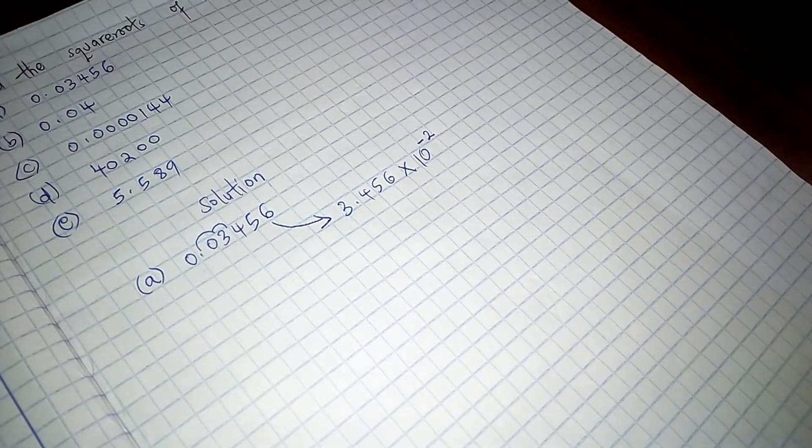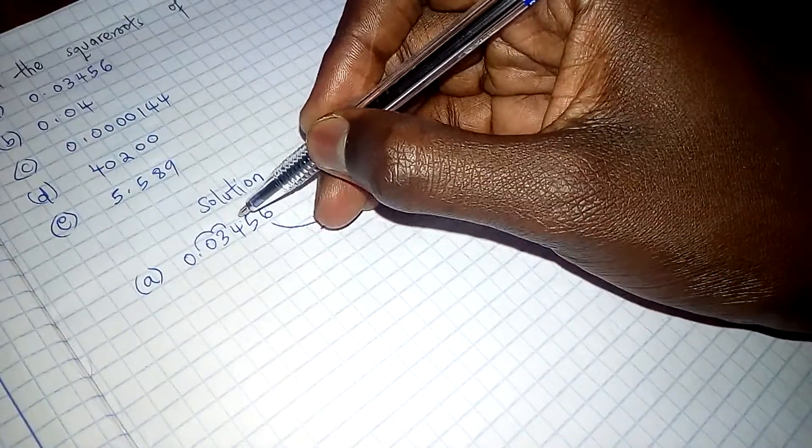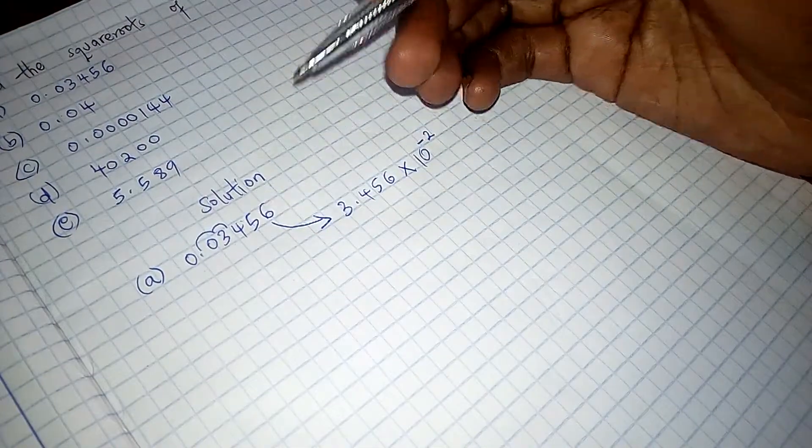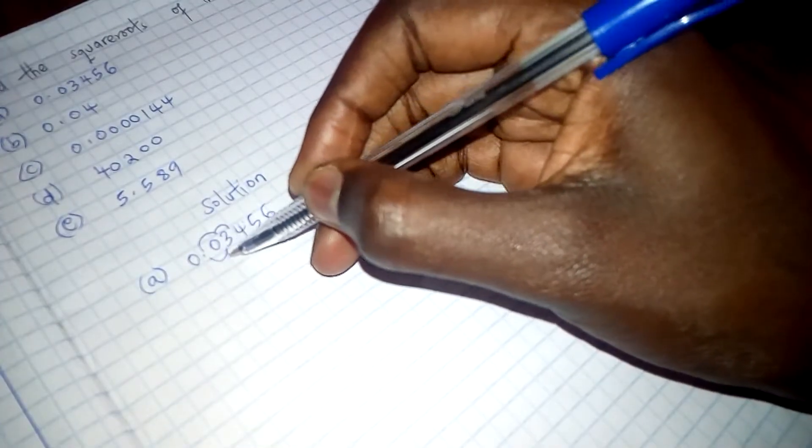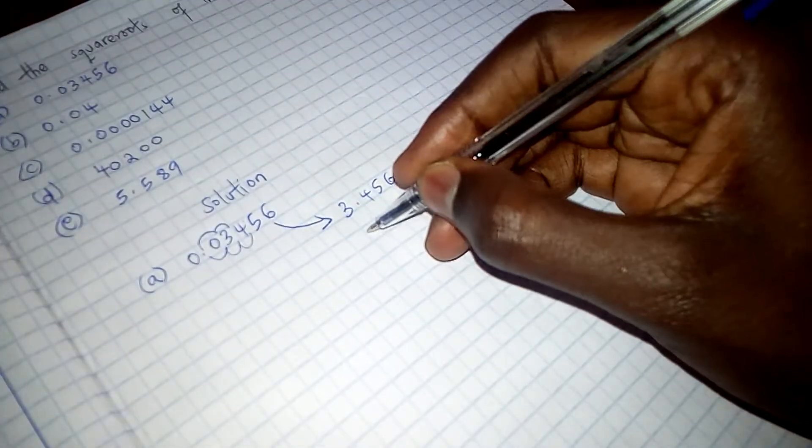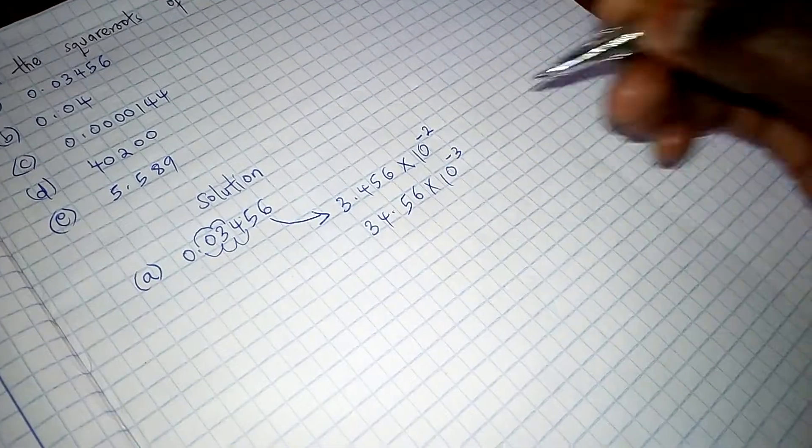Again when we try to put it in that range between 10 to 100, we can bring the decimal point in between 4 and 5 so that we have it move here 1, 2, 3. So we have 34.56 times 10. It has moved three times.